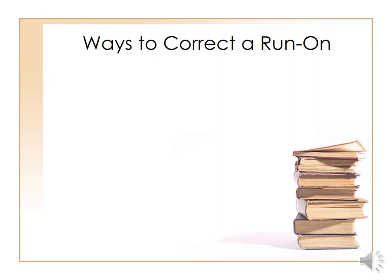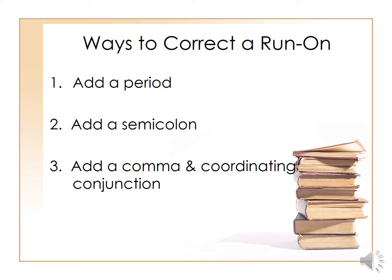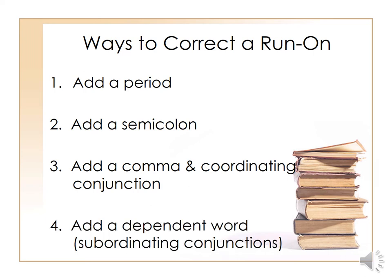So how can we correct a run-on? There are four ways to do it. The first one is to add a period — or a semicolon. The second is to add a comma and a coordinating conjunction. The third is to add a dependent word, the subordinating conjunction.